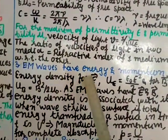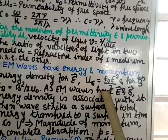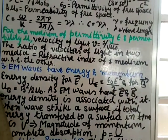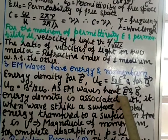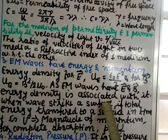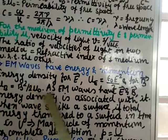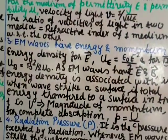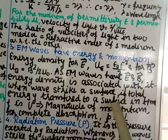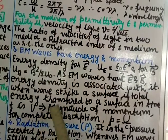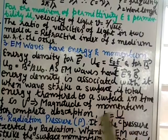Property 3: EM waves have energy and momentum. The energy density for the electric field is uE = ε₀E²/2, and for the magnetic field uB = B²/(2μ₀). Since EM waves have both electric and magnetic field energy densities associated with them, the EM wave also carries energy density. When waves strike a surface, if the total energy transferred to the surface in time t is U, then the magnitude of momentum for complete absorption is p = U/c.